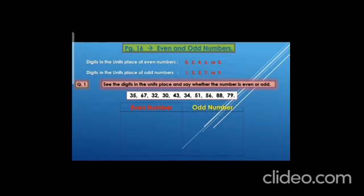Now, the first number is 35. What is there in the units place? 5. So what is it — odd number or even number? Very good, it is an odd number. Now 67: in the units place we have 7, so what number is it? Odd number. Very good. Now 32: in the units place we have 2, so it will be an even number.